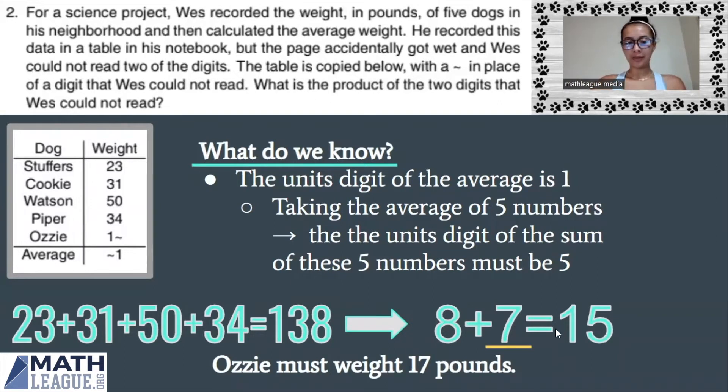Eight plus seven is 15. Ozzie's weight must be 17 pounds in order to get that perfect five that we need for the average of the five weights to end in a one.